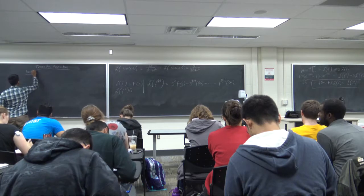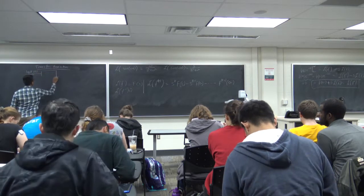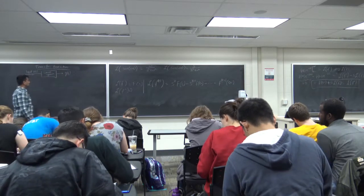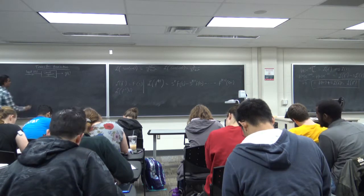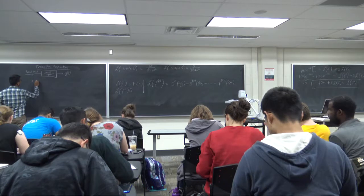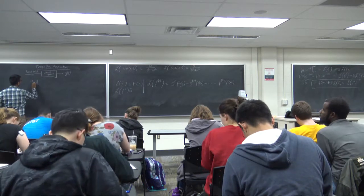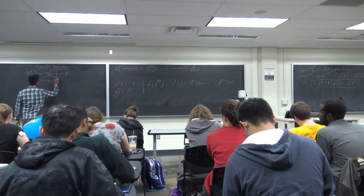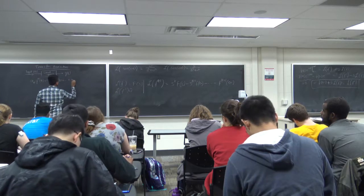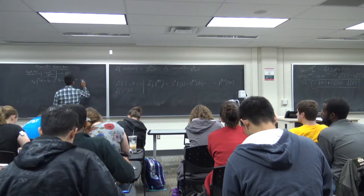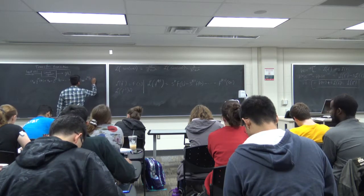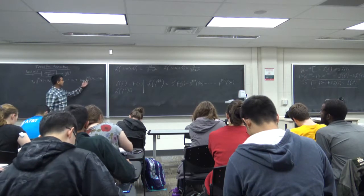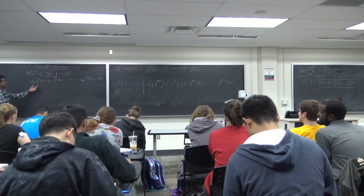Consider a linear system with input u(t) and output y(t). The governing differential equation has terms a_k·y^(k)(t) + a_{k−1}·y^(k−1)(t) + ... + a_0·y(t) on the left, and b_m·u^(m)(t) + ... + b_0·u(t) on the right. The left side involves derivatives of the output up to order k, and the right side involves derivatives of the input up to order m.